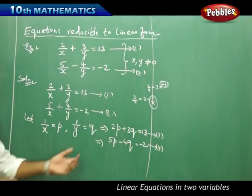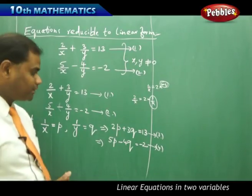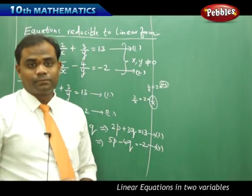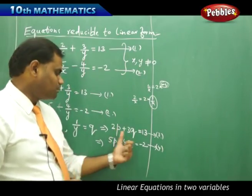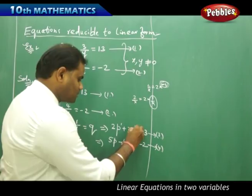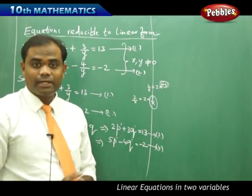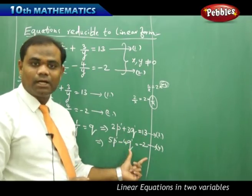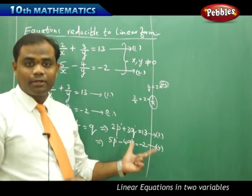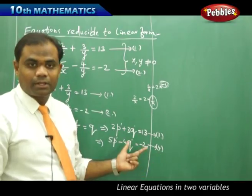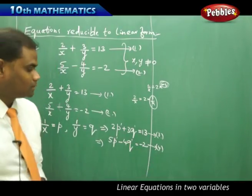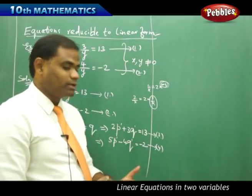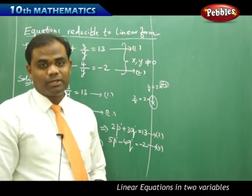Clearly, equation 3 and equation 4 are linear equations in two variables p and q. The variables are assumed to be p and q, and since each of the powers of p and q is one — which is a non-negative integral power — therefore these two equations are very much linear equations in variables p and q. Our goal now is to solve these two equations and find the values of p and q.